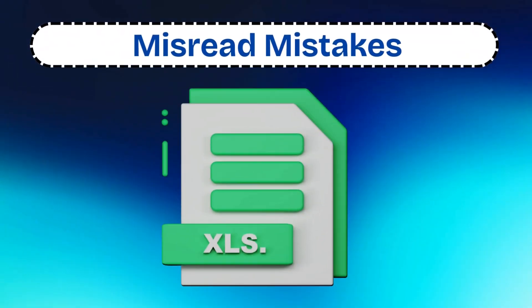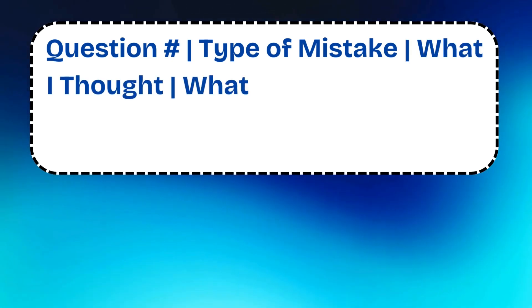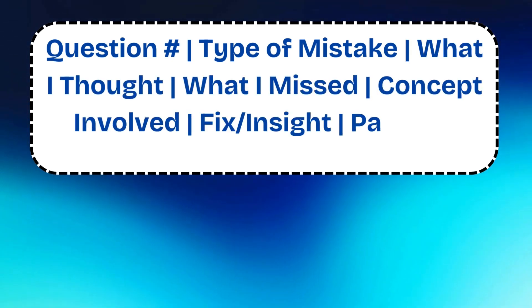The next type of mistake is misread mistakes — the silent score killers. These are particularly frustrating because you actually knew how to solve the problem but missed what was being asked. In your error log spreadsheet, track the following columns: the question, type of mistake, what you thought, what you missed, concept involved, fix or insight, and whether there is a pattern (yes or no). The pattern column helps you identify recurring issues — for example, if you're consistently making careless mistakes on questions involving negative exponents, that becomes a high-priority area to address.